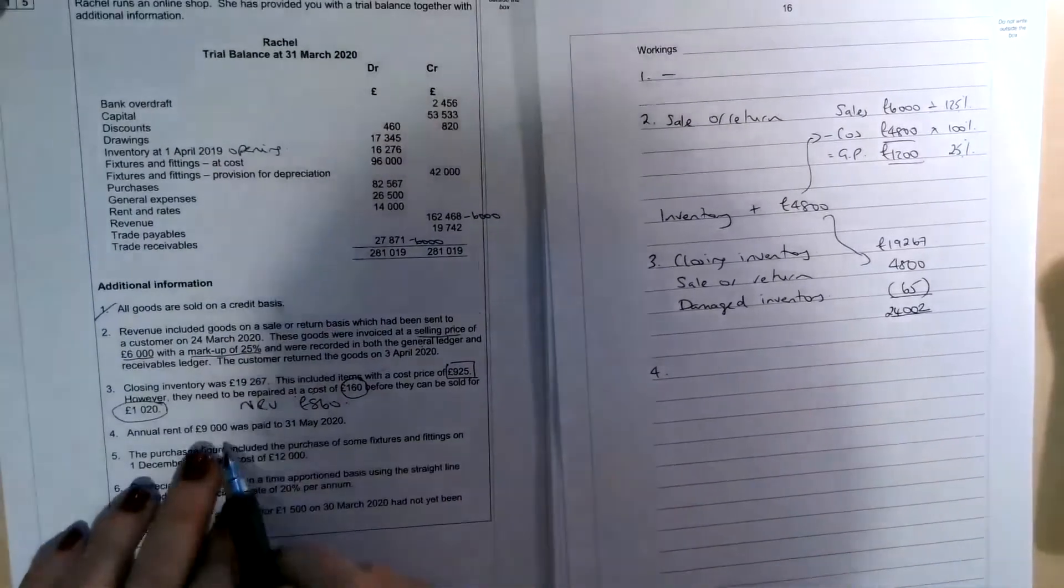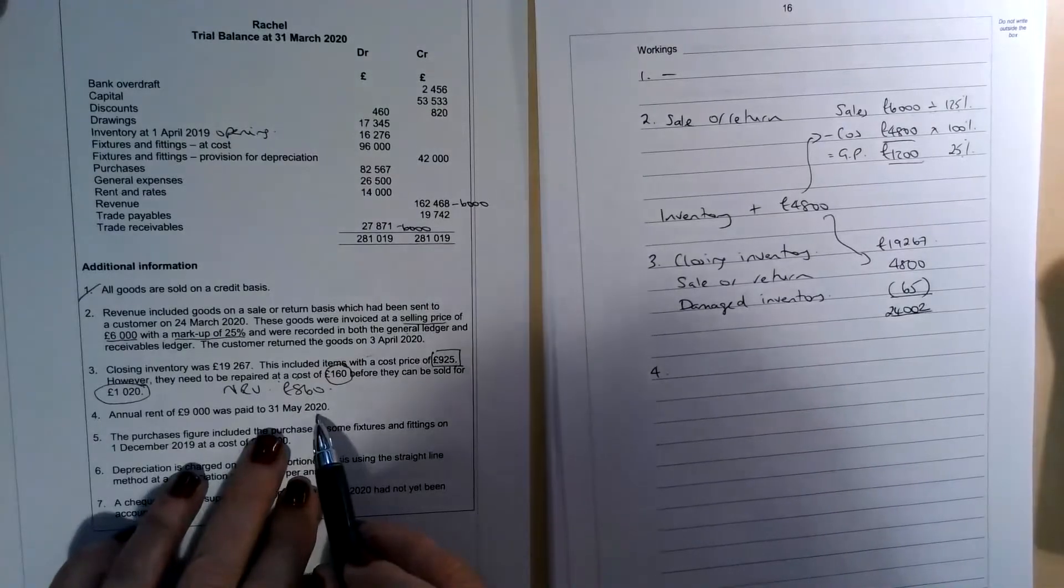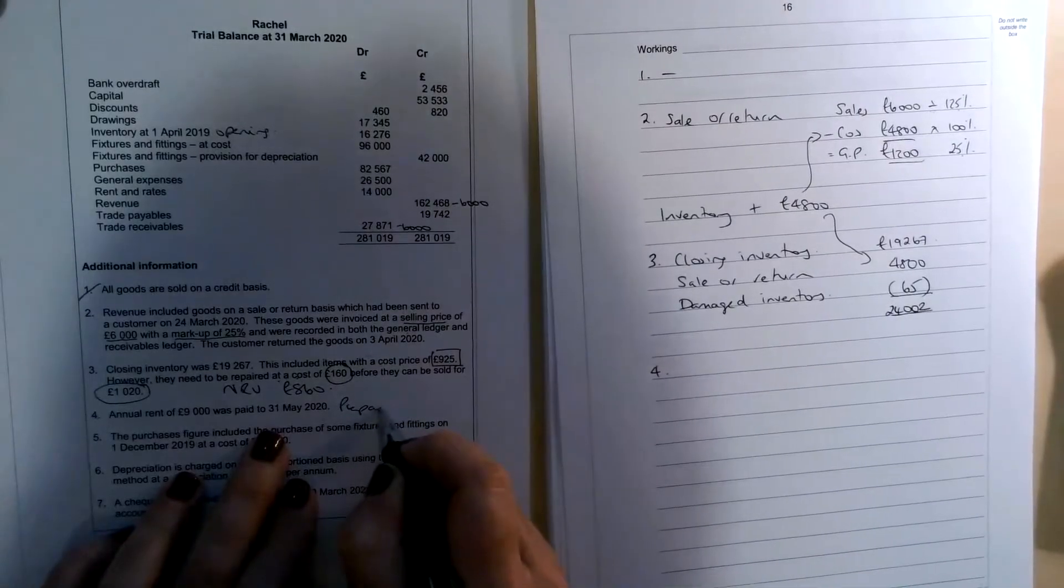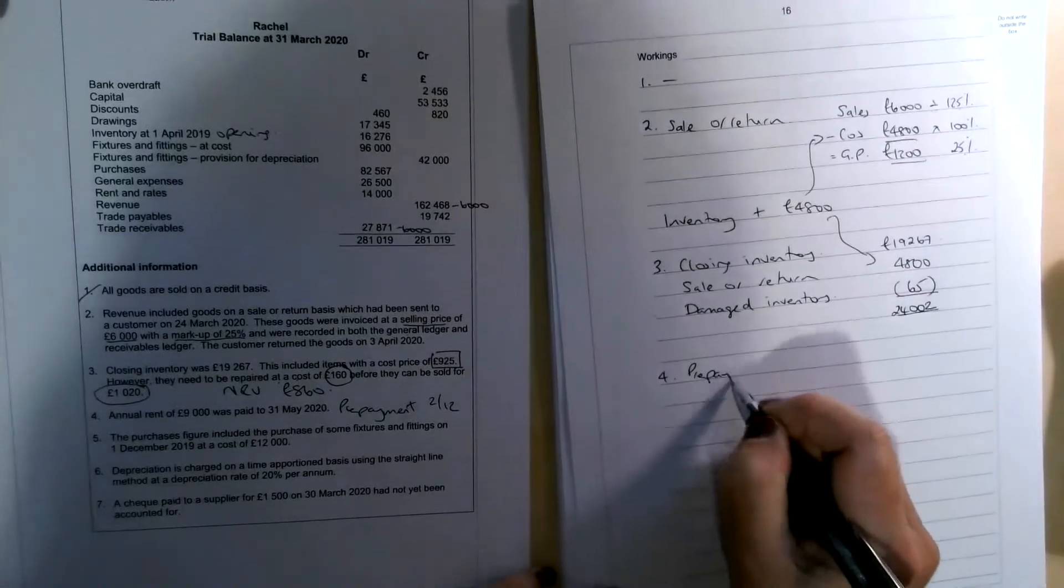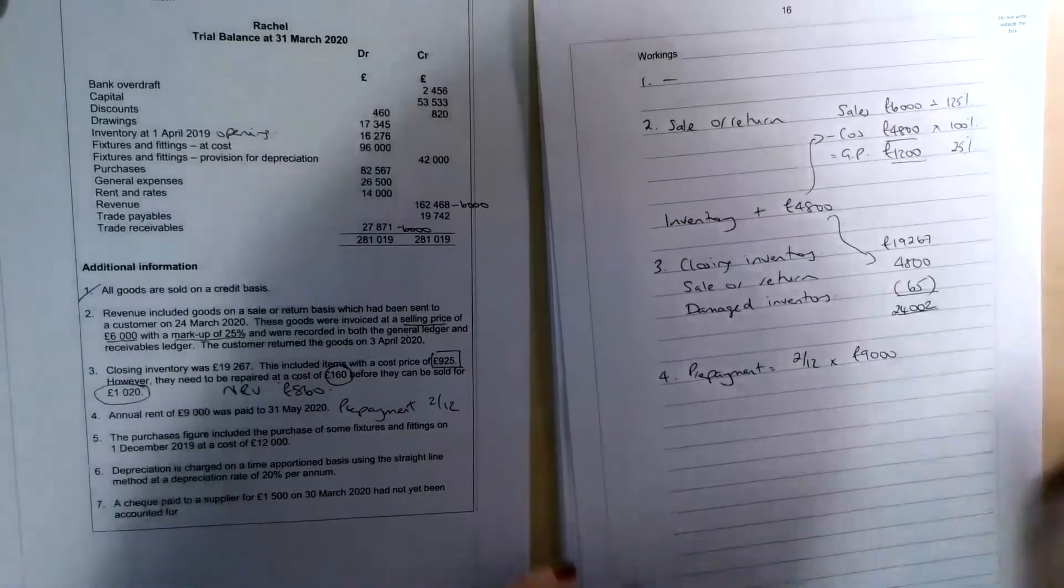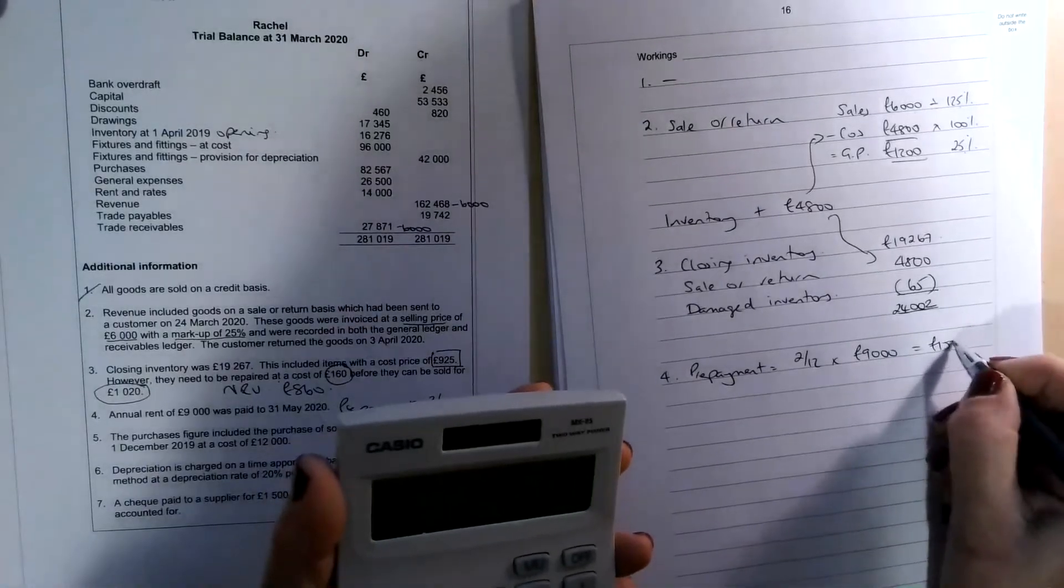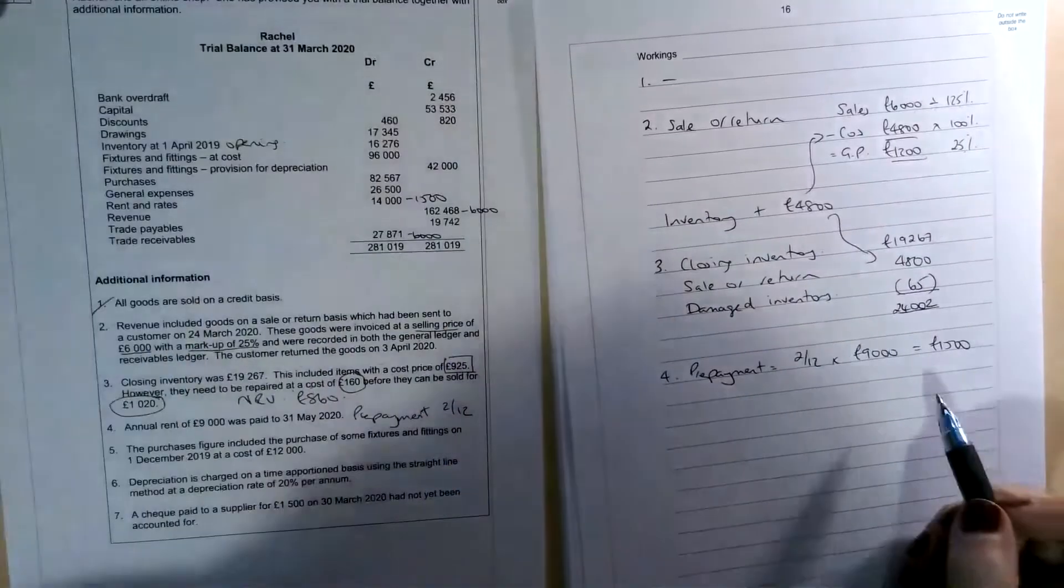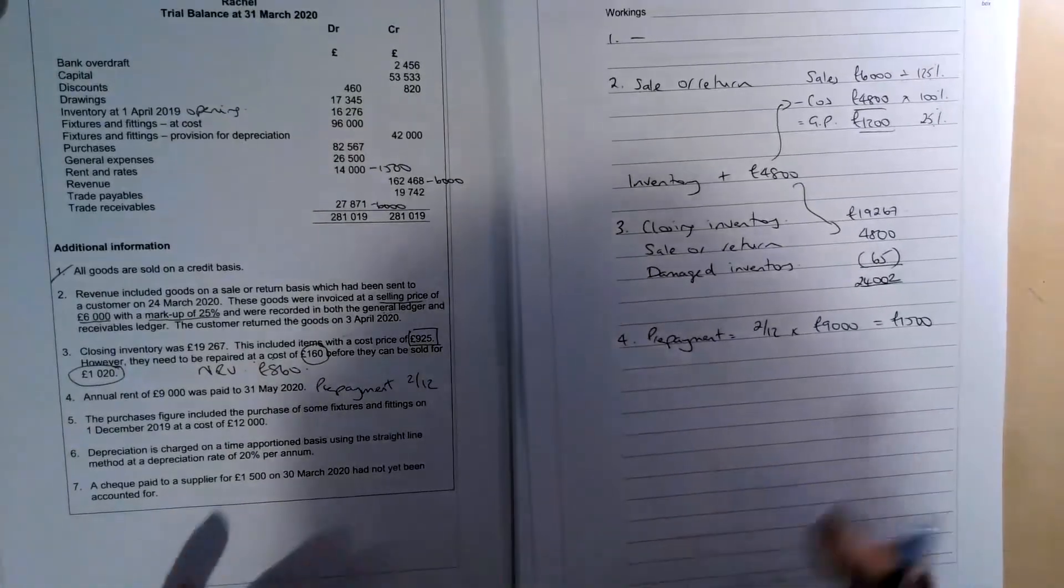Number four, we've got annual rent of £9000 was paid to the 31st of May 2020. The year ends in March. So the prepayment is actually going to be two twelfths of that amount. So let's just do that as a working. The prepayment is 2 over 12 times £9000. So £9000 effectively divided by 6, £1500. So we're going to need to take £1500 away from the rent and rates. And we would add that as a current asset if we were doing a statement of financial position.